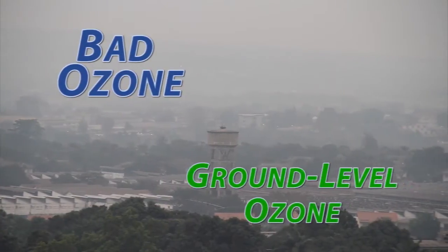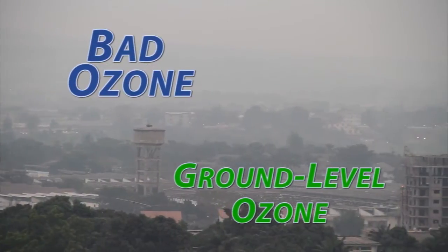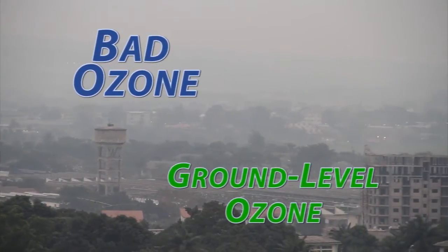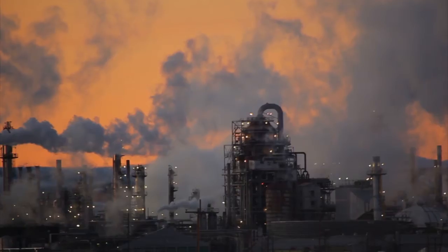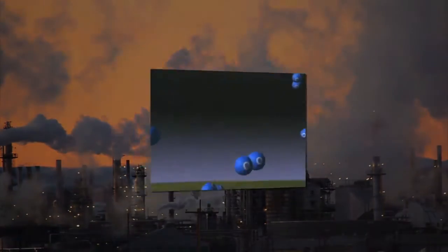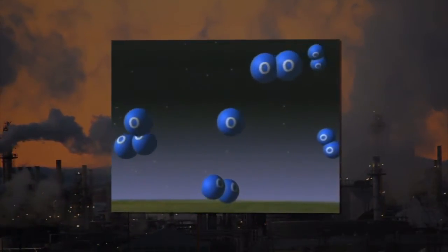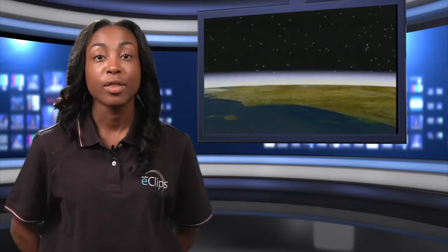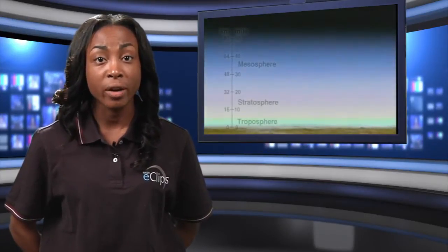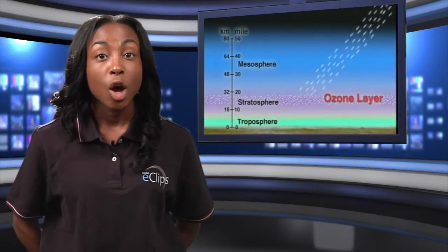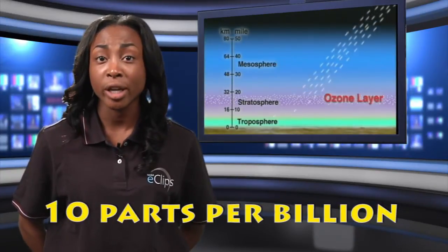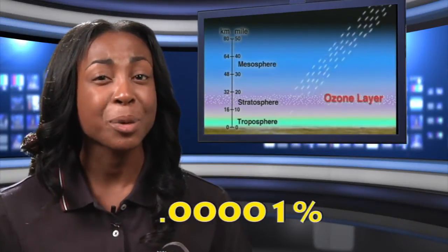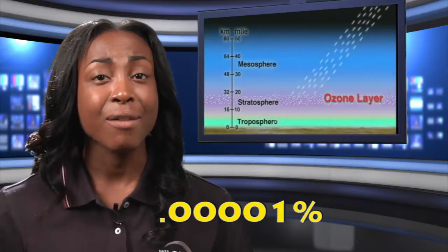Bad ozone, or ground-level ozone, is an air pollution problem created when pollutants like exhaust, paints, cleaning fluids, or other industrial emissions react with sunlight, creating more of the unstable ozone molecules. In the troposphere — the lowest level of Earth's atmosphere and the one we're in right now — ozone's natural concentration is about 10 parts per billion, or about 100,000th percent of the atmosphere.